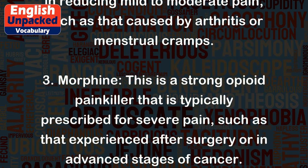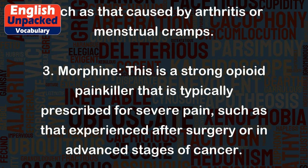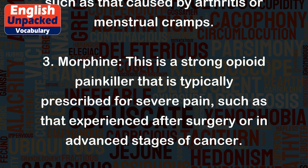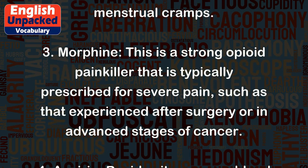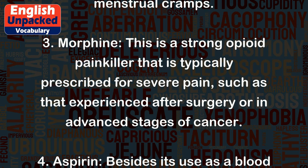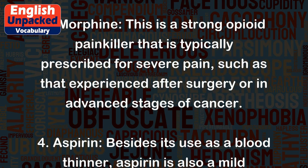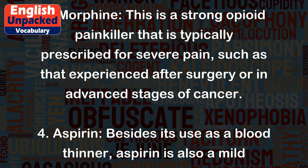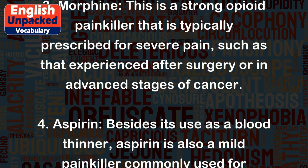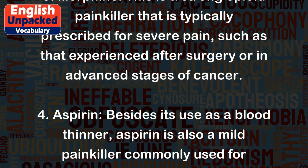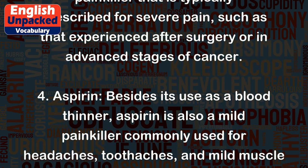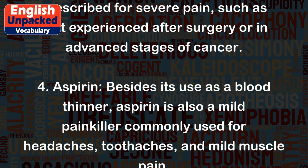3. Morphine — this is a strong opioid painkiller that is typically prescribed for severe pain, such as that experienced after surgery or in advanced stages of cancer.